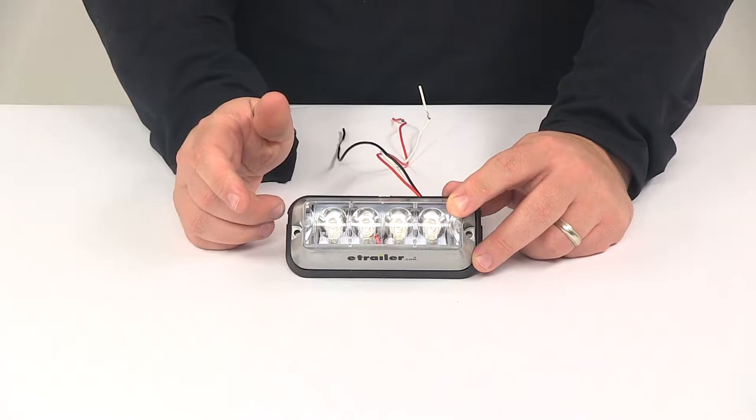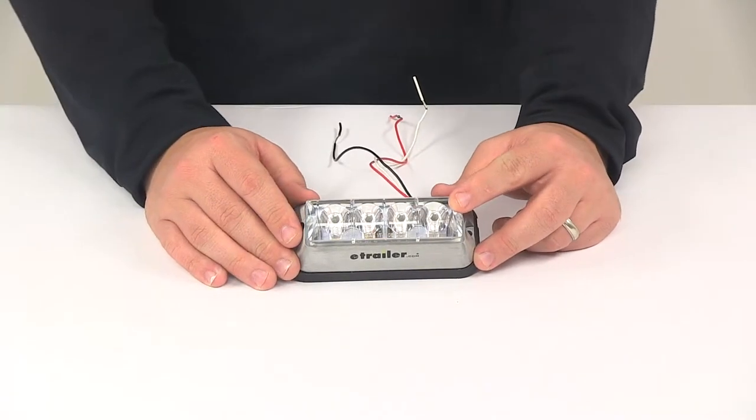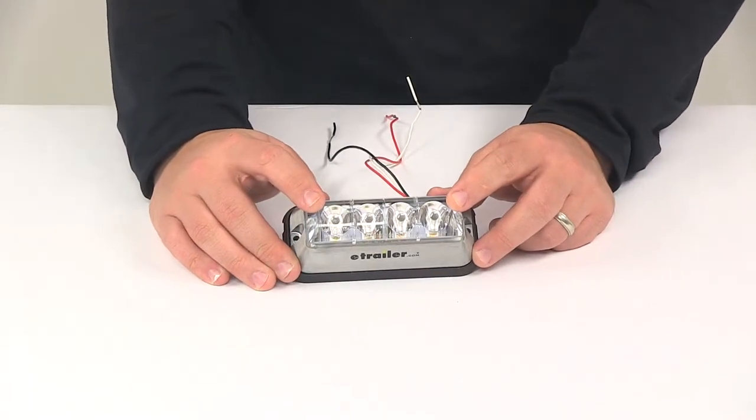LEDs make great replacements for incandescent lights. They last longer, they burn brighter, they're much more efficient. You don't have to worry about replacing bulbs or worry about brittle filaments.